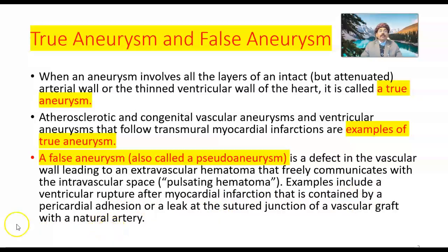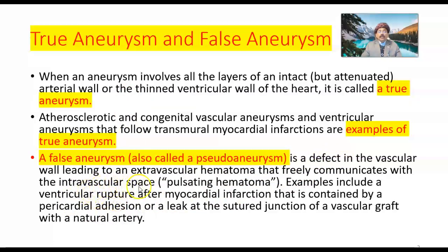So the difference is that a true aneurysm involves all the layers of an intact arterial wall, whereas a false aneurysm involves a defect in the vascular wall with an extravascular hematoma where blood leaks out and freely communicates with the intravascular space.